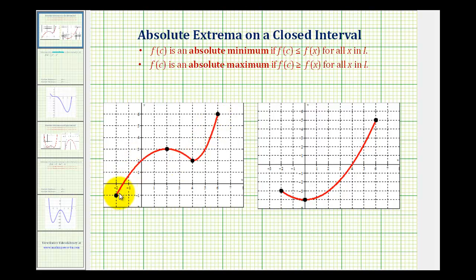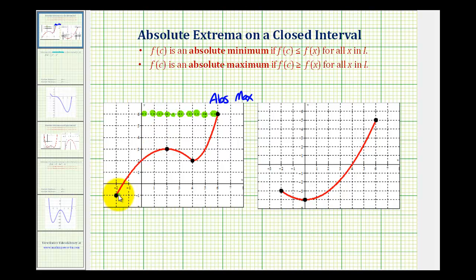Looking at this function on this closed interval, notice that the largest function value occurs at this endpoint here. So this point represents the absolute maximum on this closed interval. And notice how the least function value is negative one at x equals negative two, so this point here represents the absolute minimum. Again, notice that it occurs at the endpoint.